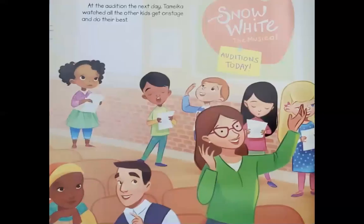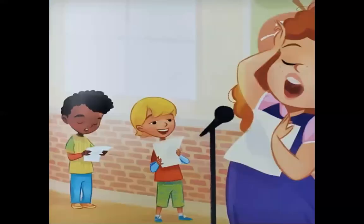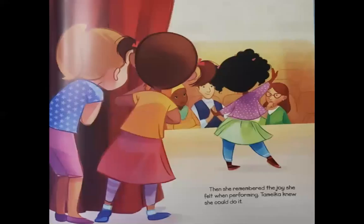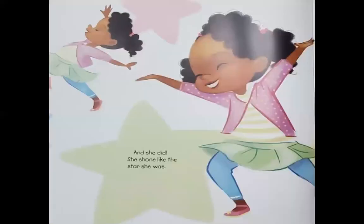At the audition the next day, Tamika watched all the other kids get on stage and do their best. Here we see these kids auditioning — they do look like they're doing well. It was Tamika's turn at last. She remembered what her parents had said, but her long legs were still a little jittery. She closed her eyes and imagined she was singing and dancing for her favorite audience of friends — stuffed and unstuffed. Then she remembered the joy she felt when performing. Tamika knew she could do it — and she did. She shone like the star she was.